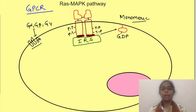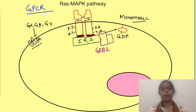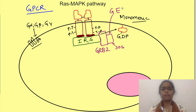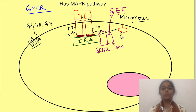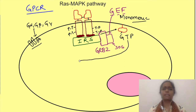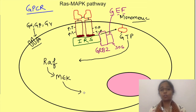The insulin receptor substrate binds with another adapter protein GRB2, which in turn binds and activates a guanine exchange factor protein called SOS. This guanine exchange factor replaces Ras-GDP with GTP, causing activation of Ras. The activation of Ras in turn leads to activation of a kinase cascade including RAF and MEK, ultimately leading to activation of MAP kinase.